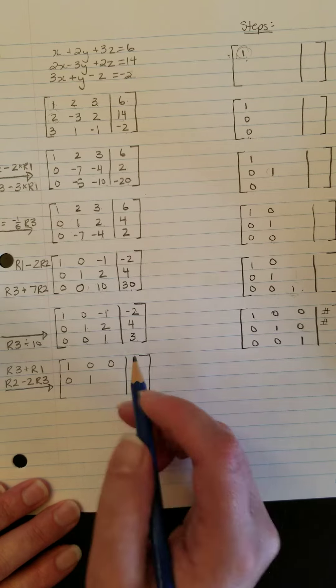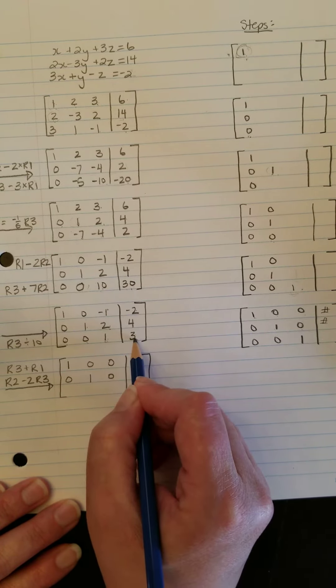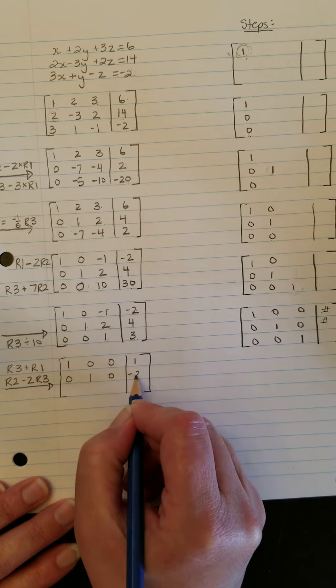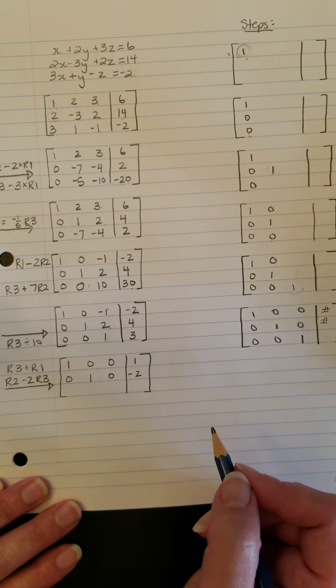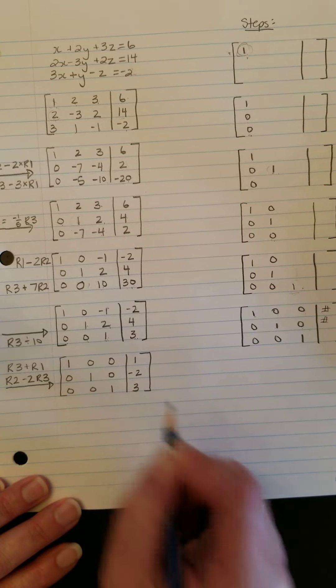2 minus 2 times 1 will give me 0. 4 minus 2 times 3 gives me negative 2, so 4 minus 6. And then the last row was all set. It was already good.